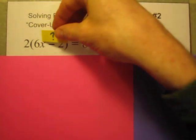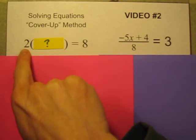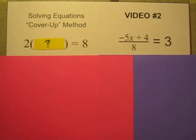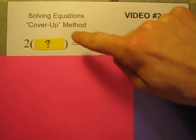For example, if I cover up that center section inside the parentheses, this becomes a simple multiplication problem. Two times what equals eight? If you think of it like that, it's really simple. Obviously, the thing I'm covering up must be four. Two times four equals eight. So whatever is underneath this yellow card must be equal to four.